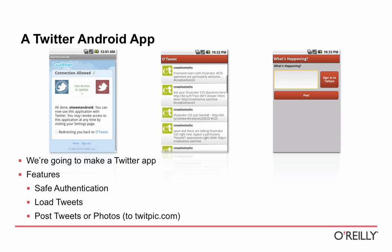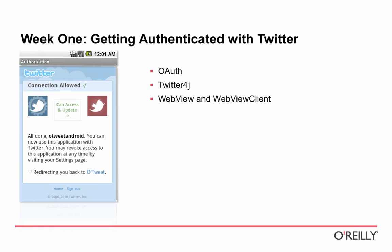Some of the things we'll be doing: we'll deal with how to sign in to Twitter safely without storing a password in the application, which is something Twitter is really pushing developers on its platform to do. Then we'll load the tweets — or the home timeline, as Twitter calls it — based on the signed-in user. Later we'll post tweets, and then post photos to TwitPic, a service that works alongside Twitter to host photos and post a tweet from its service. You can find the example app on the Android Marketplace by searching for 'O-Tweet'.